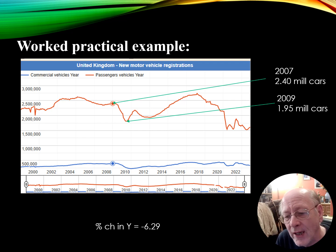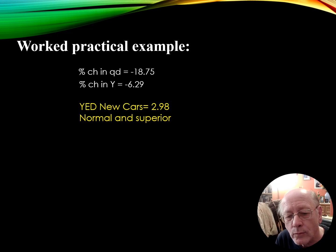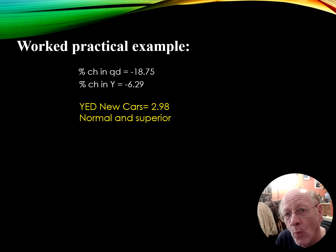Looking at new car registrations: in 2007 there were 2.4 million, but by 2009 that had fallen to 1.95 million — a fall of 18.75%. So the income elasticity of demand is minus 18.75 divided by minus 6.29, which gives 2.98. Because both figures moved in the same direction the result is positive, making cars a normal good, and because it's greater than one, cars are also a superior good.